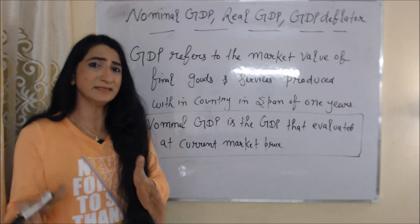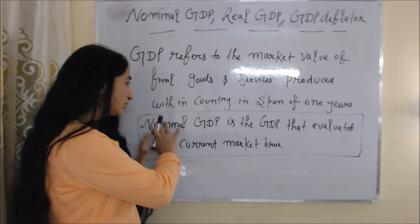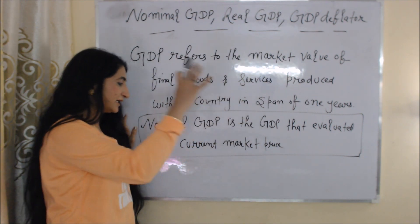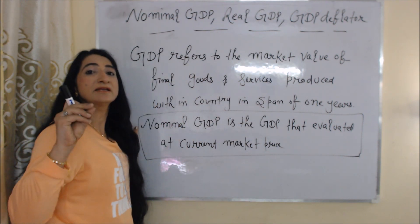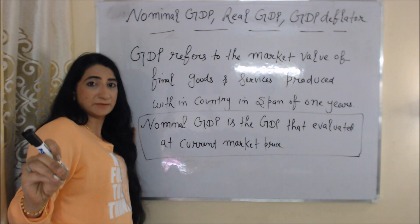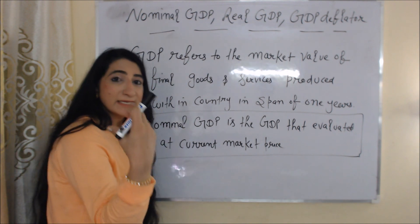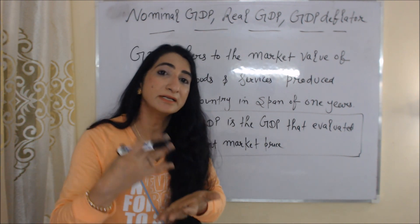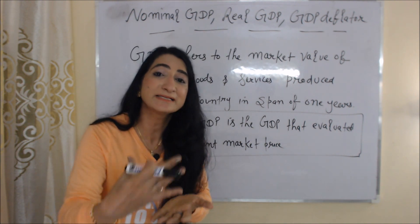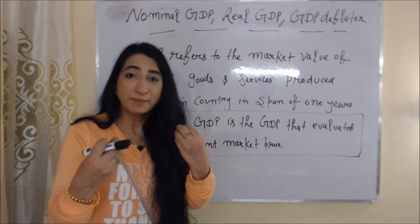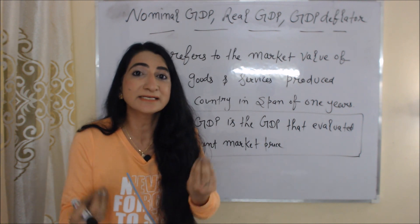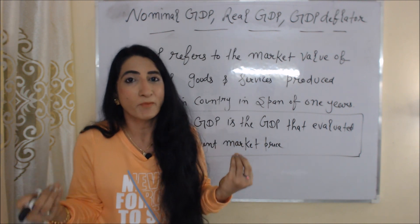Now, what is nominal GDP? Nominal GDP is the GDP that is evaluated at current market price. Or we can say that we measure nominal GDP at present price — present price meaning the price existing at a given moment.